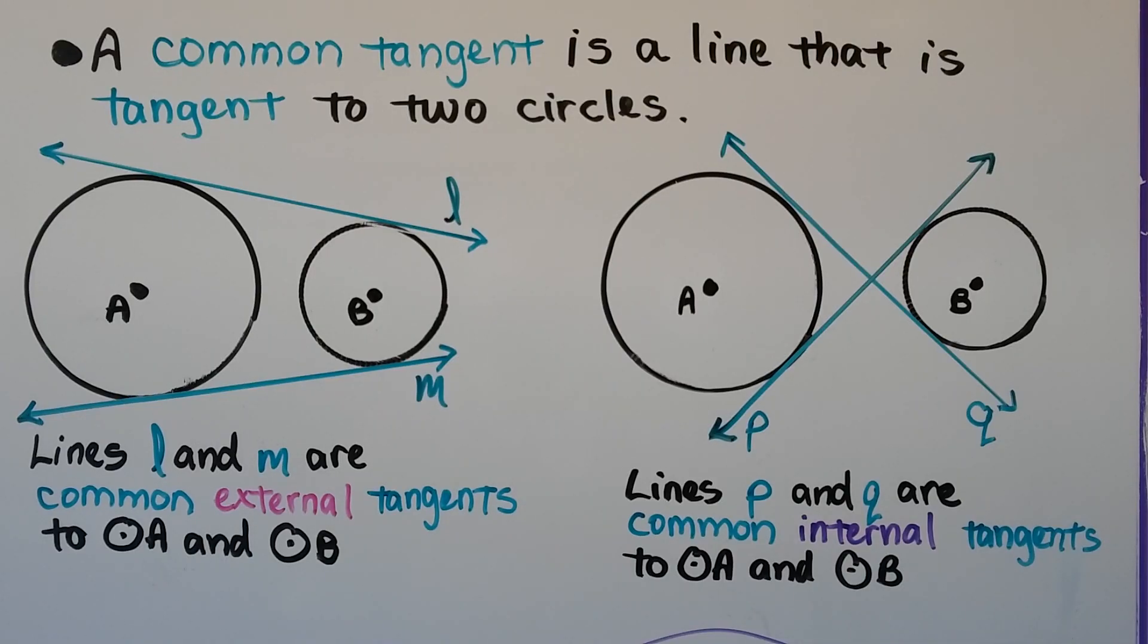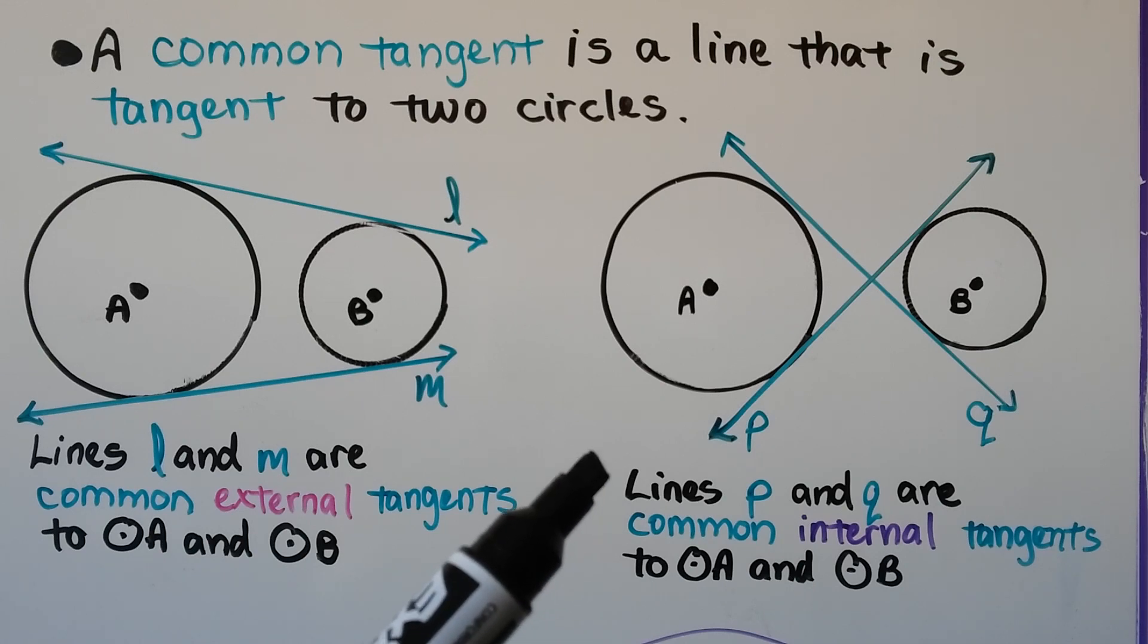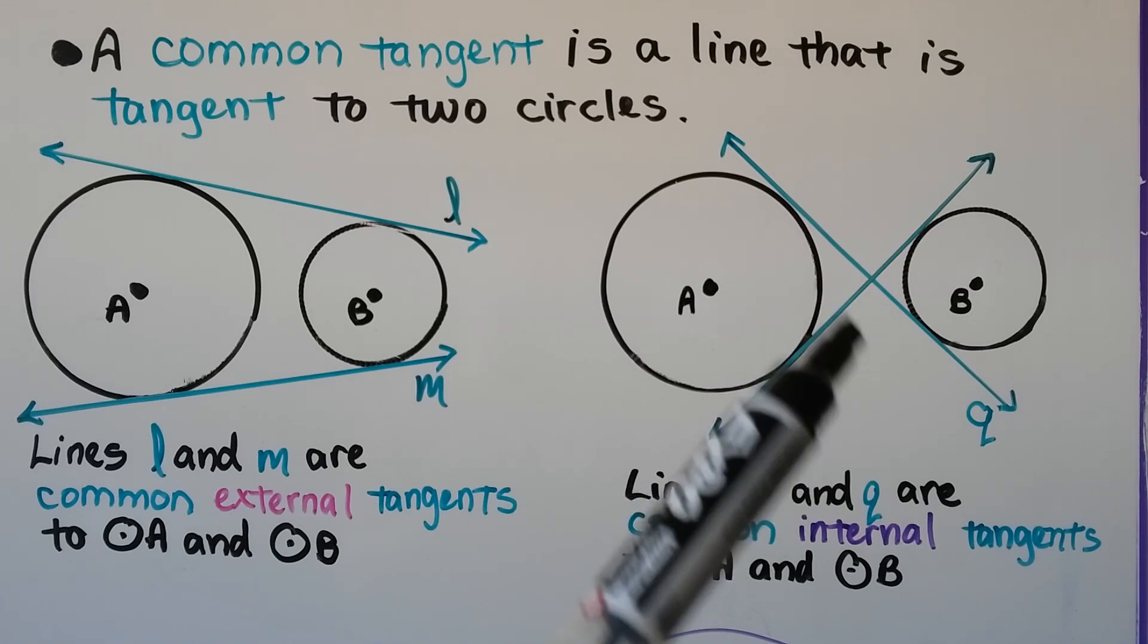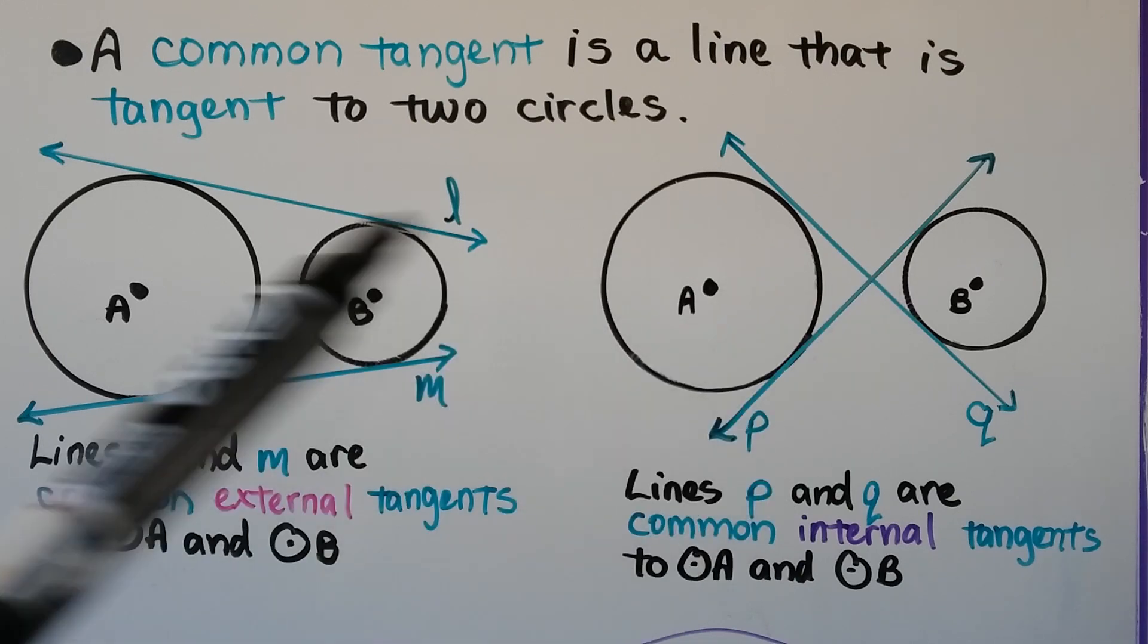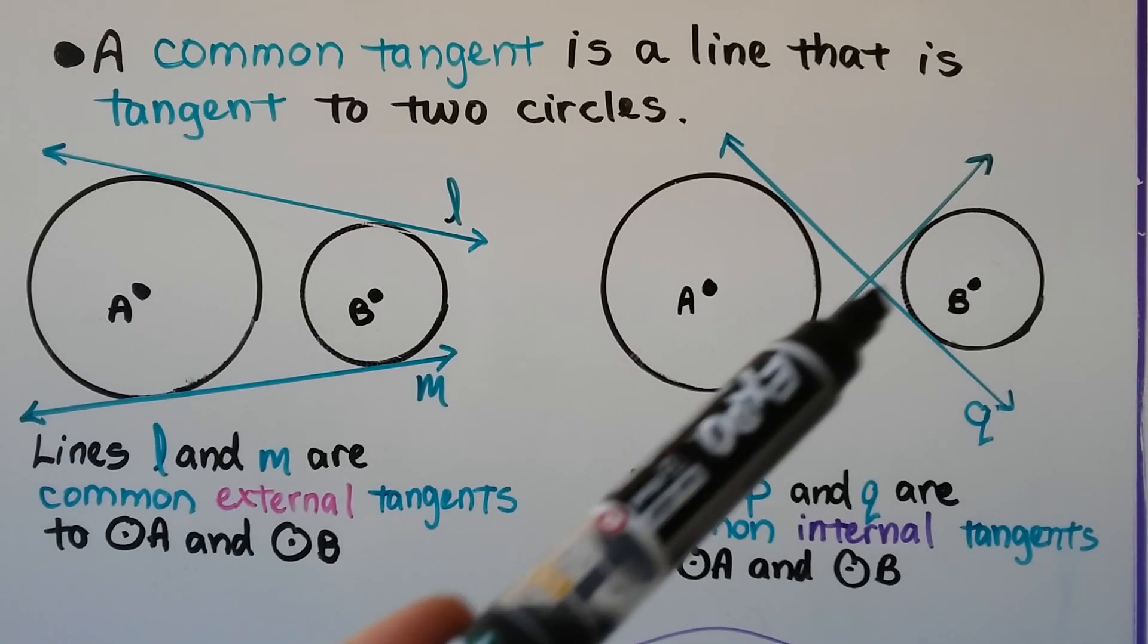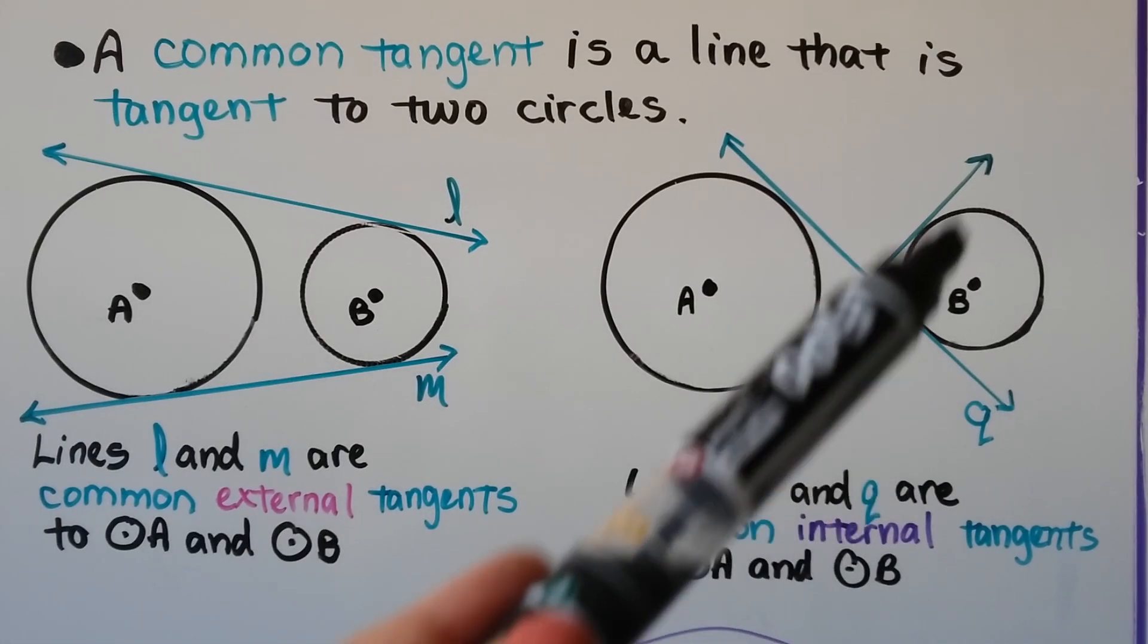A common tangent is a line that is tangent to two circles. Here we have two circles, circle A and circle B. Lines L and M are common external tangents to circle A and circle B. They're external because they're on the outside of the two circles. And here lines P and Q are common internal tangents to circle A and circle B because they're on the inside. These are on the outside, so they're external. These are on the inside, so they're internal.